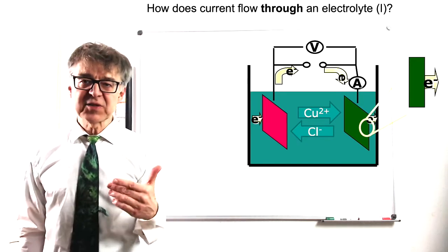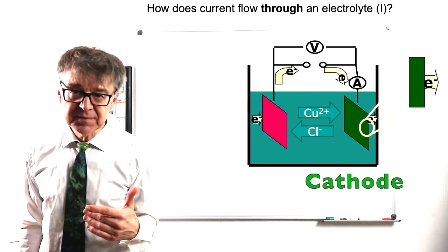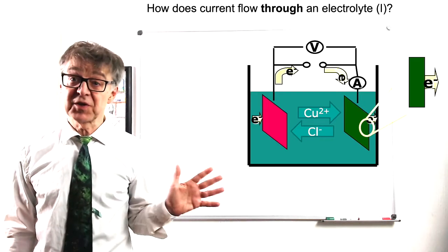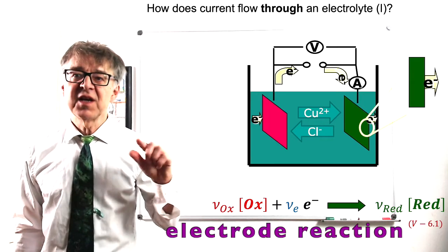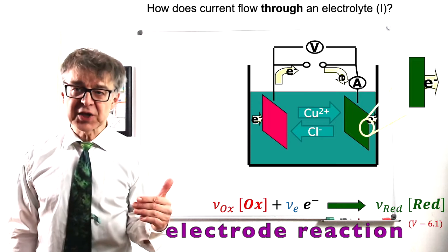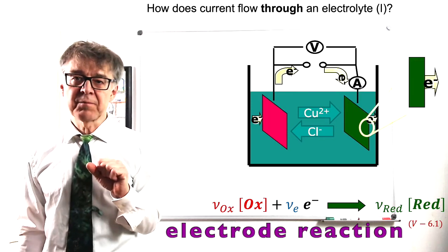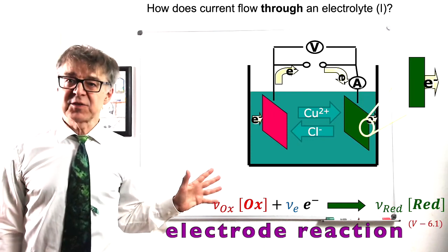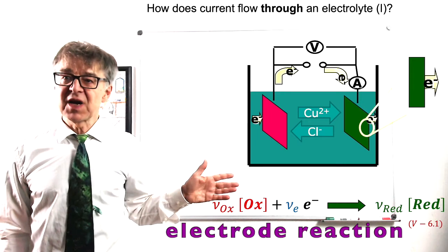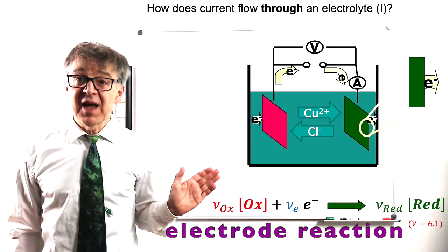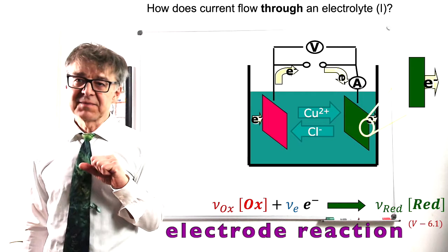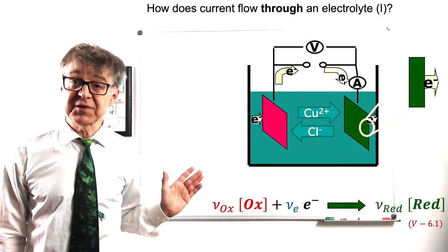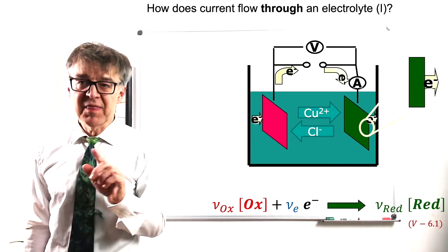Electrons have to move from the metal into the electrolyte on one terminal. We call the electrode on this terminal the cathode. The transfer of electrons from the electronic conductor into the electrolytic conductor, or vice versa, is called the electrode reaction, or rather half reaction. We always express this electrode reaction in the way that the oxidized species and the electrons are on the left-hand side and the reduced species on the right-hand side.